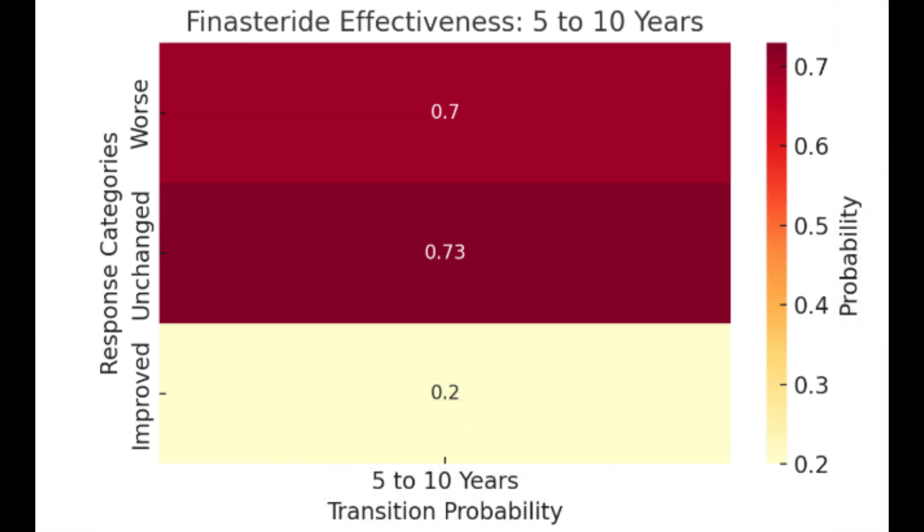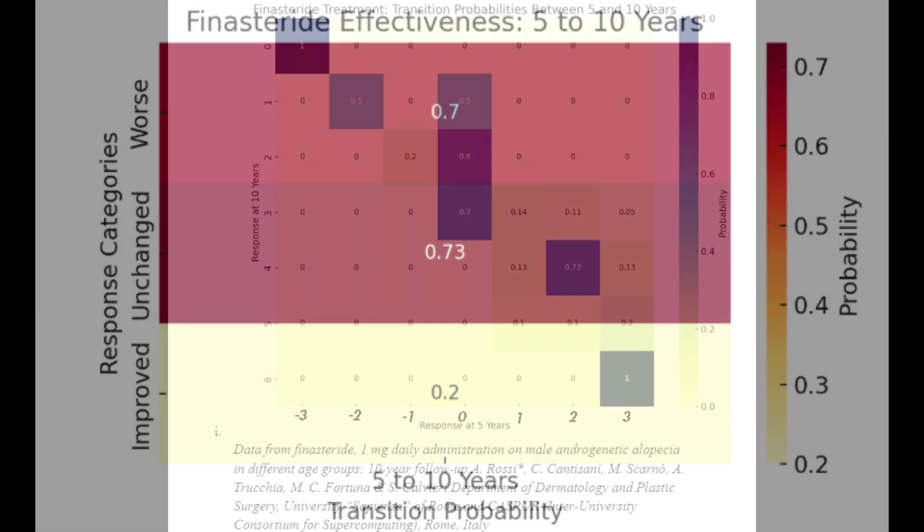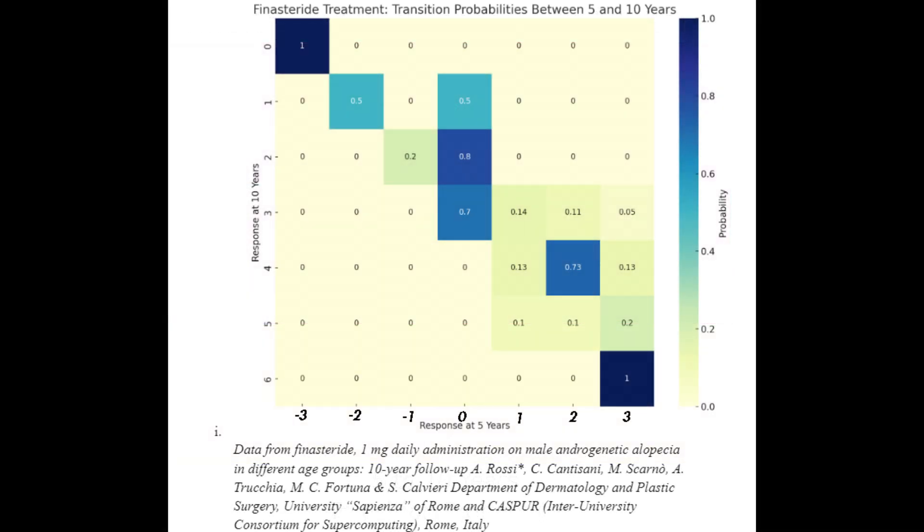So let's do a deeper look here between year 5 and year 10. The transition probabilities between 5 and 10 years per patient. So if you're not looking at the screen, please look at the screen now. You have a heat map with values.